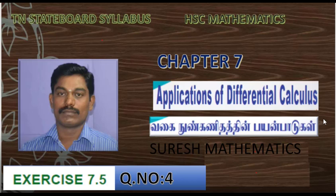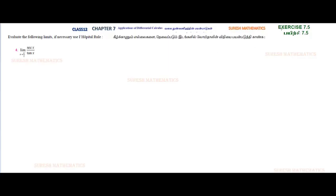Hi students, 12th Maths, Chapter 7, Application of Differential Calculus, Exercise 7.5, Question Number 4. Limit x tends to pi by 2 minus, secant x by tan x. So left hand limit: x approaches pi by 2 from the left side, very close to pi by 2. So secant pi by 2 divided by tan pi by 2.